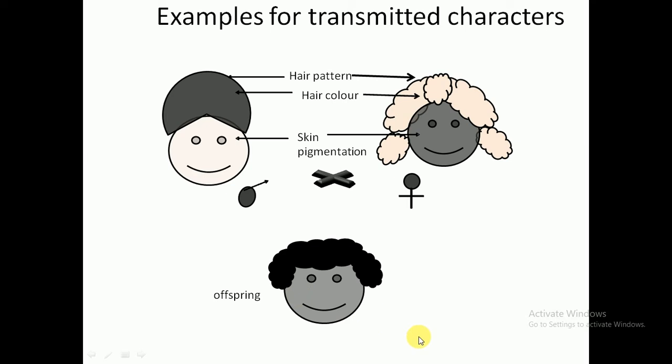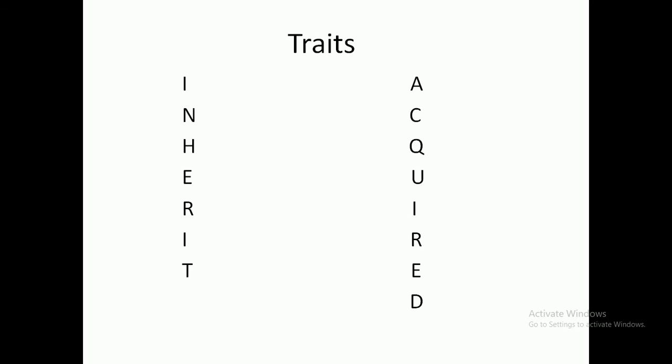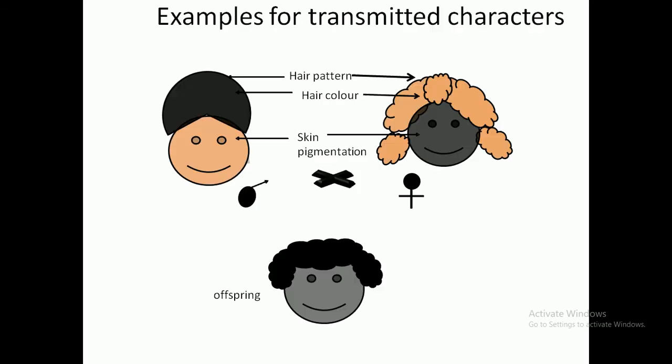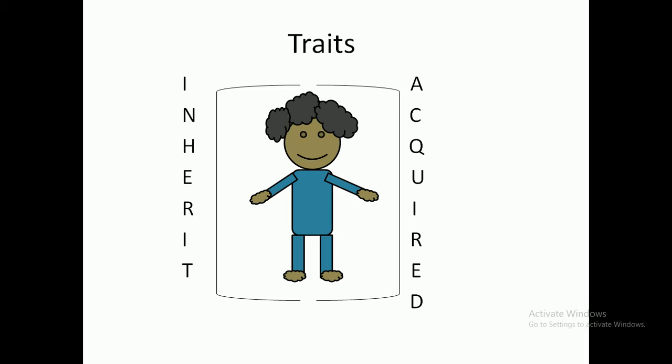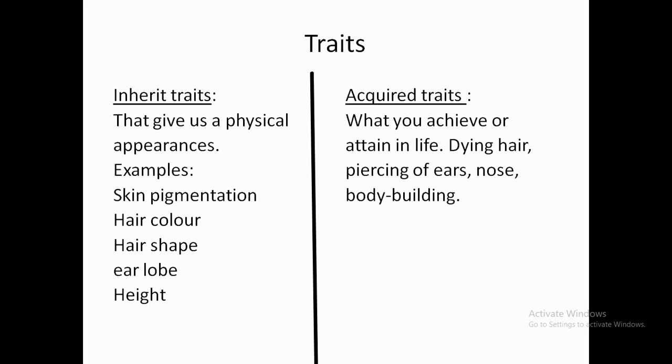Characters are also known as traits, and these traits are of two types: inherited and acquired. Inherited traits are those which give us a physical appearance, like skin pigmentation, hair color, hair shape, earlobe shape, and height. Acquired traits are those which you achieve or attain in life, like piercing of the ear, piercing of the nose, or body building. These traits are not genetically inherited from your parents.